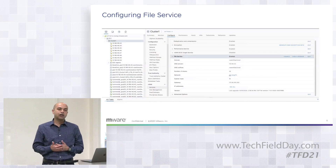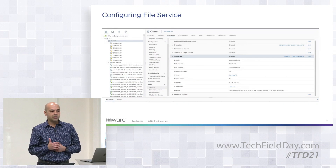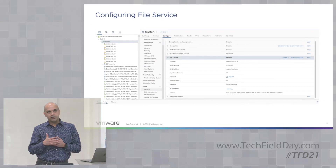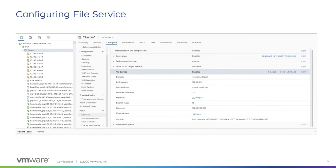Here are a few screenshots showing how file service is configured. File service is like any other feature vSAN offers, similar to space efficiency or encryption. You can just turn it on using the configuration tab for your vSAN cluster. What you're seeing here is a cluster that's already configured, and you can go and edit the configuration, provide parameters, and get your file service up and running.